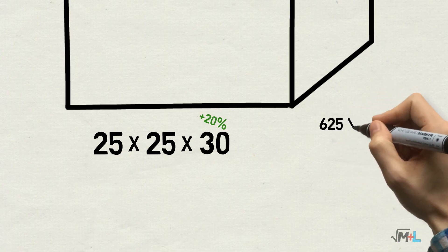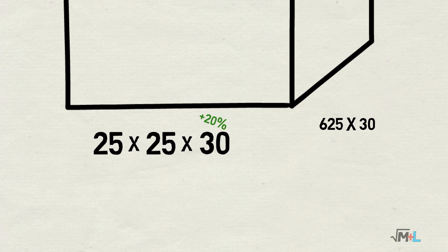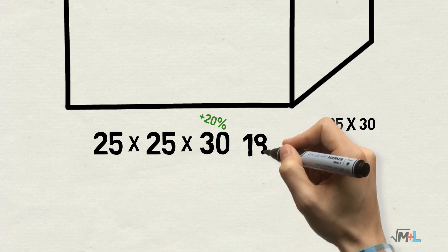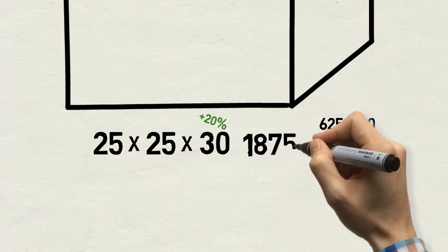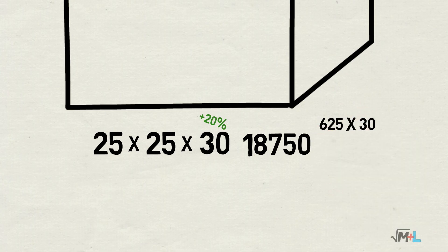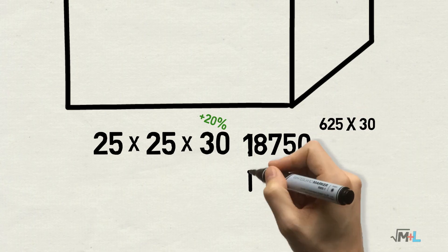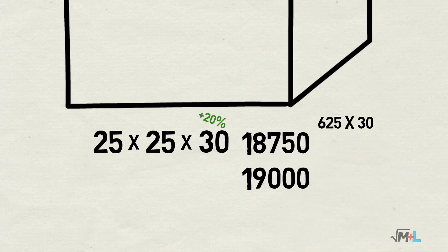25 squared is 625, which you should know by heart if you use the same method of multiplying two digit numbers as I use. Now times 30. 6 times 3 is 18, 25 times 3 is 75 and 0 at the end. So in total it's 18,750.